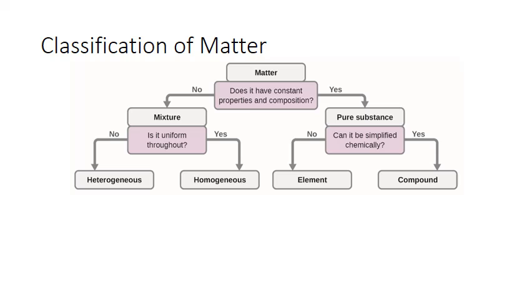All matter can be classified as either a mixture or a pure substance. And we can further classify mixtures as heterogeneous or homogeneous and pure substances as either elements or compounds. Making these distinctions takes practice and an understanding of the particle nature of matter. There are some basic questions you can ask yourself as you learn to distinguish the different types of matter. First, to distinguish between mixtures and pure substances, ask yourself whether all samples of the substance have constant properties and composition.